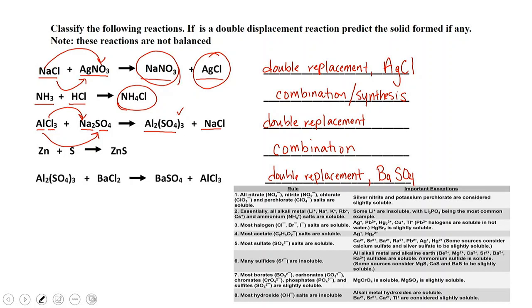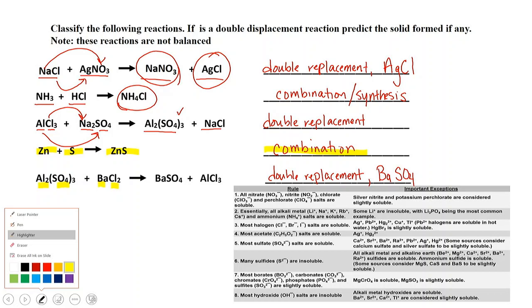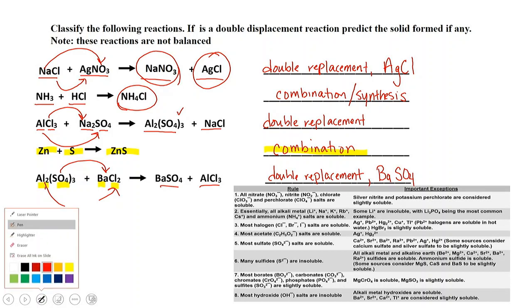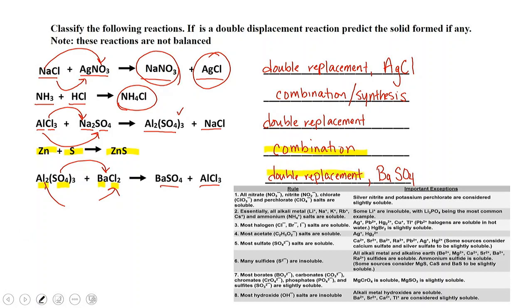For zinc plus sulfur giving us zinc sulfide, we've got two reactants becoming one — so we have a combination reaction. For the bottom reaction, we've got two partners that swap out, so we have a double replacement reaction. Let's check for a precipitate. Sulfates are soluble except for barium, so barium sulfate is our precipitate in that reaction.